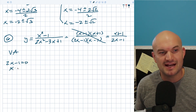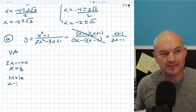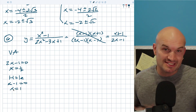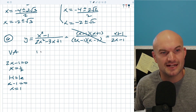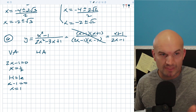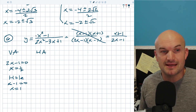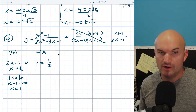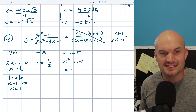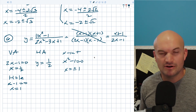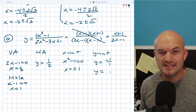For the horizontal asymptote, the powers are exactly the same, so it's leading coefficient over leading coefficient: y equals one-half. To find the x-intercept, take the numerator x squared minus one equal to zero, giving x equals plus or minus one. For the y-intercept, I take negative one over positive one, so y equals negative one.